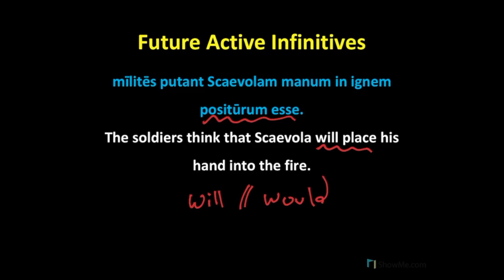One more thing to point out. Remember that the future active participle is a -us, -a, -um adjective, and as an adjective, we'll need to agree with the noun it modifies in case, number, and gender. Positurum needs to agree with Scaevola. And so positurum is accusative, masculine, and singular, because Scaevolam is also accusative, masculine, and singular. There it all comes together.